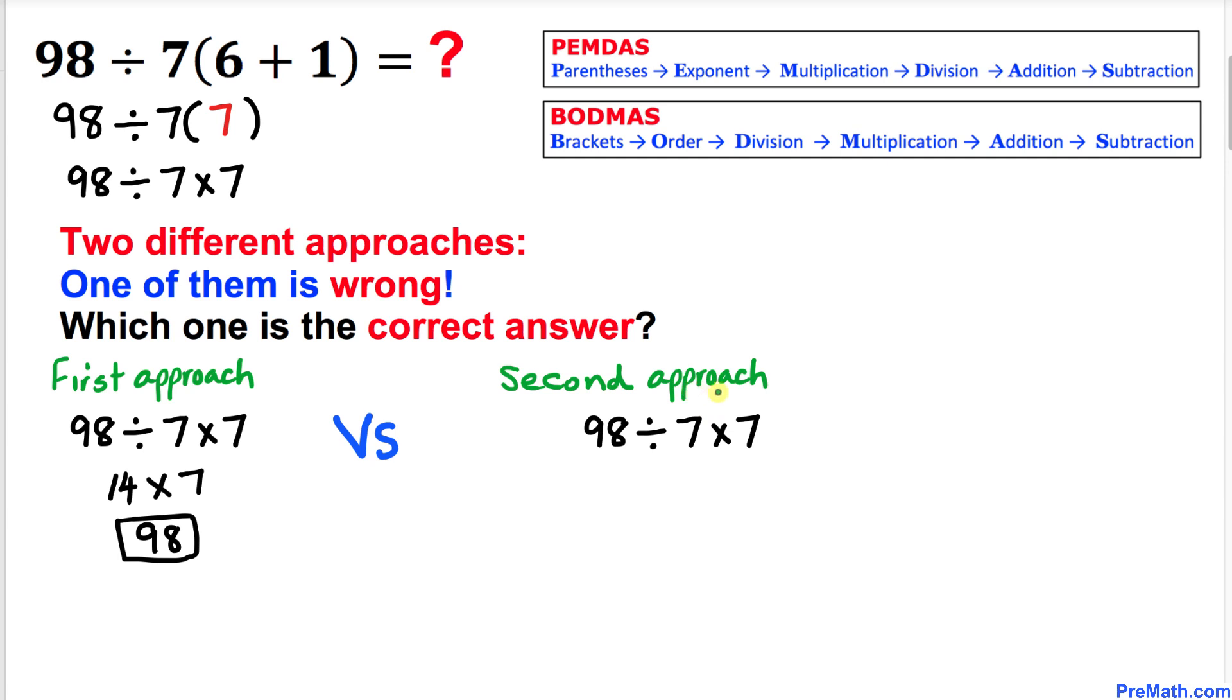And now in the second approach we are going to take care of 7 times 7 first. So that is going to give us 98 divided by when we multiply 7 times 7 is 49 and now 98 divided by 49 is going to give us answer 2.